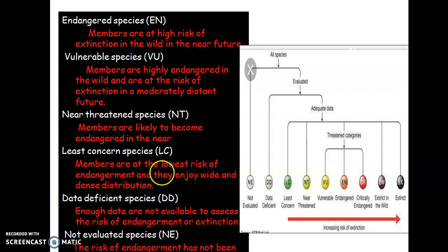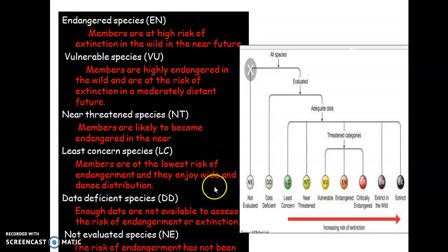Then comes Least Concerned species, represented by LC, shown in green color. These members are at the lowest risk of endangerment and enjoy a wide and dense distribution — we can see them in almost all habitats, with a cosmopolitan distribution — but they may become extinct, not in the near future. Then comes Data Deficient species, represented by DD, where enough data are not available to assess the risk of endangerment or extinction.